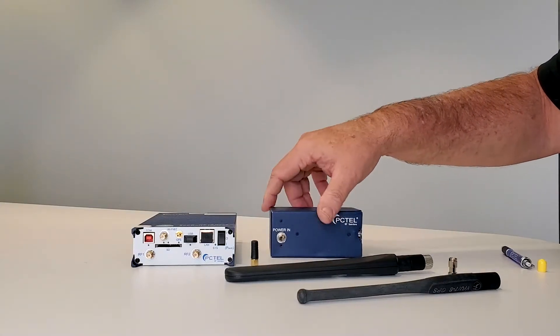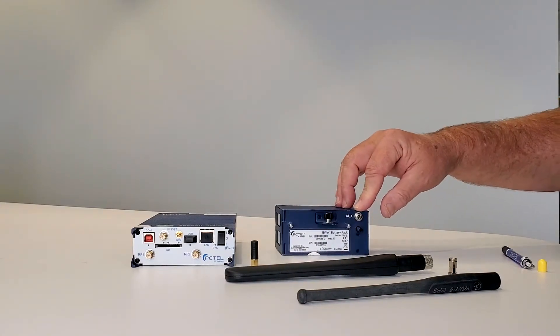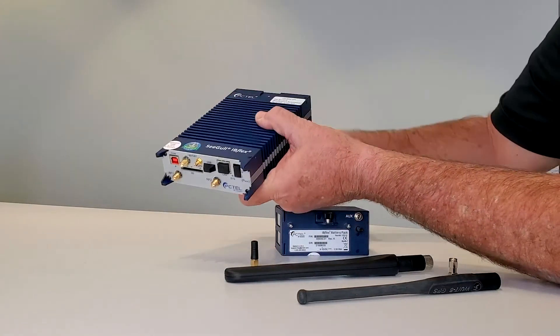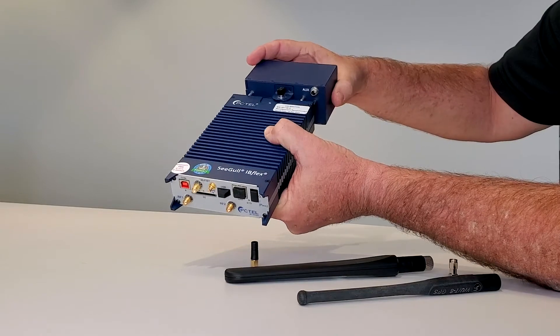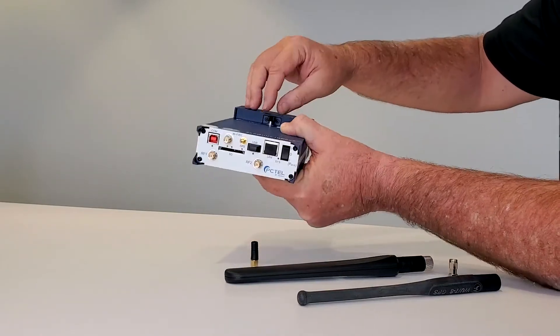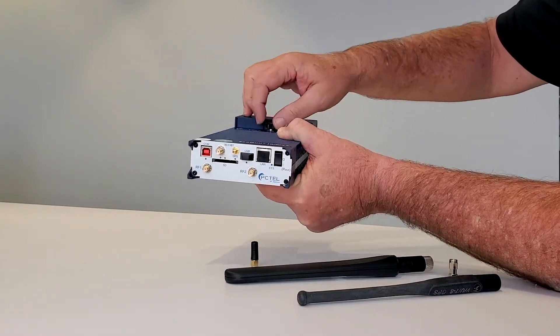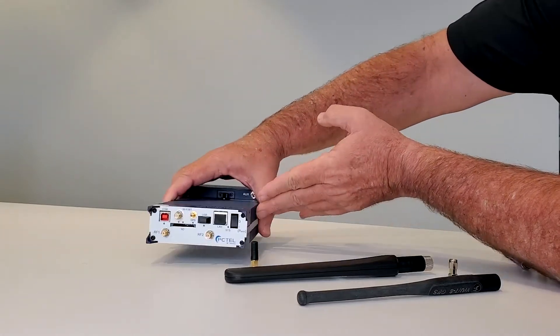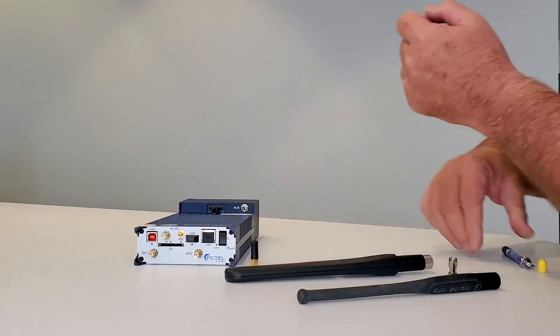Power in is on the back. This auxiliary is actually a power out for some of our other applications. We're going to place this on our scanner. Tighten the set screw so we can maintain a firm connection, and we're ready to start putting our antennas on.